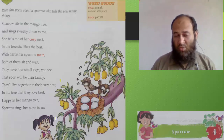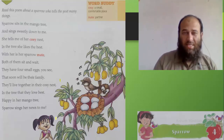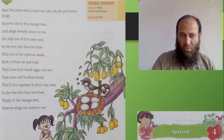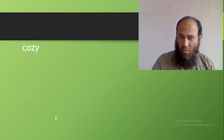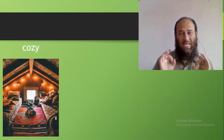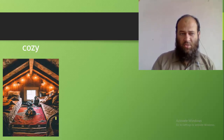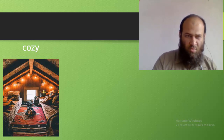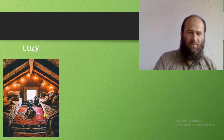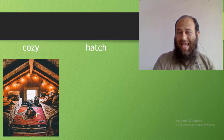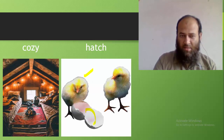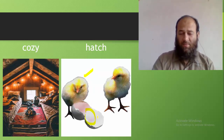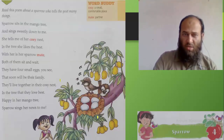I'm going to read it once again to you. But before I read it again, I want to show you the word cozy. The word cozy means a small but comfortable place — this is also a small place, but it is comfortable. Then the word hatch. Hatch means when chicks come out of the egg — they hatch the eggs and come out. Let's get back to our poem.